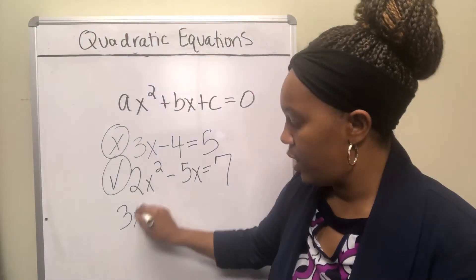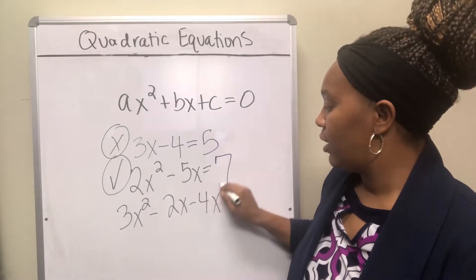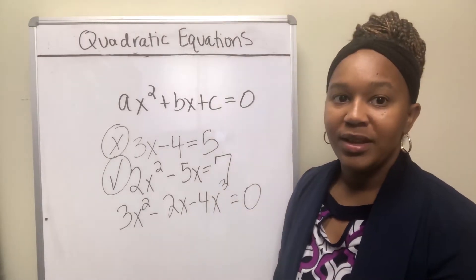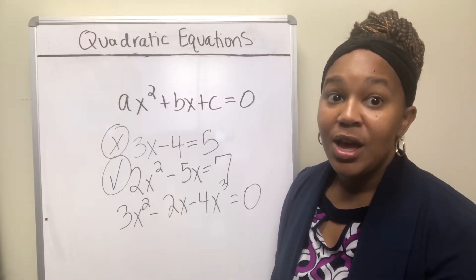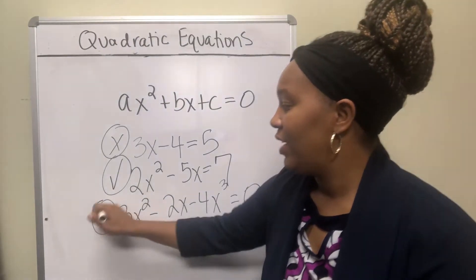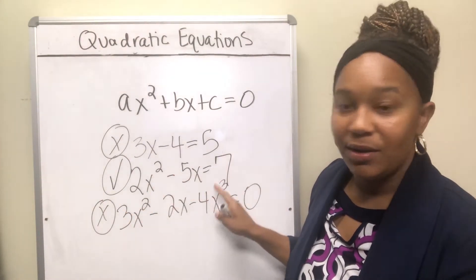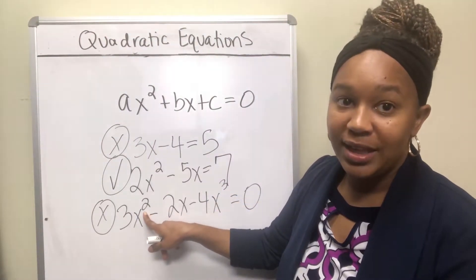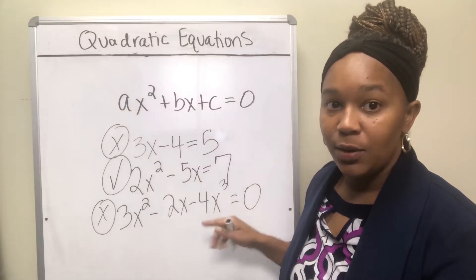Next: 3x squared minus 2x minus 4x to the third equal zero. Is that a quadratic equation? No, it's not. It has one variable, one equal sign, but the highest exponent on x is now three. It has a term with a two, but that's not the biggest — the biggest is three — so this is not a quadratic equation.